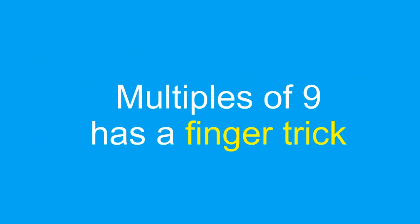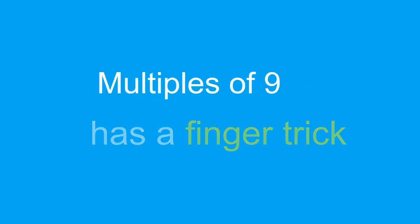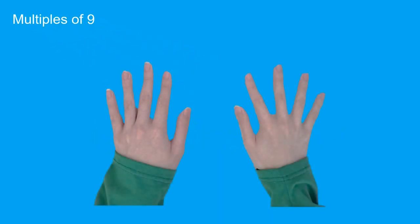Multiples of nine has some interesting finger trick. First, let's show up all of our fingers in our hands. We start from the very left over here. These fingers show times one, times two, times three, times four, times five, times six, times seven, times eight, times nine, and times ten.